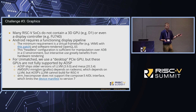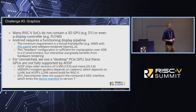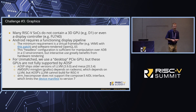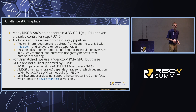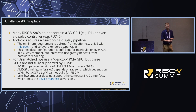The third challenge is graphics. A lot of RISC-V SoCs don't contain a 3D GPU — for example, the D1 only has a 2D GPU that doesn't support OpenGL, and the Unmatched board's FU740 has no graphics hardware at all and relies on an external PCIe card. Android requires a functioning display pipeline to boot to the home screen, which means at minimum a framebuffer and some OpenGL ES implementation, whether hardware or software.